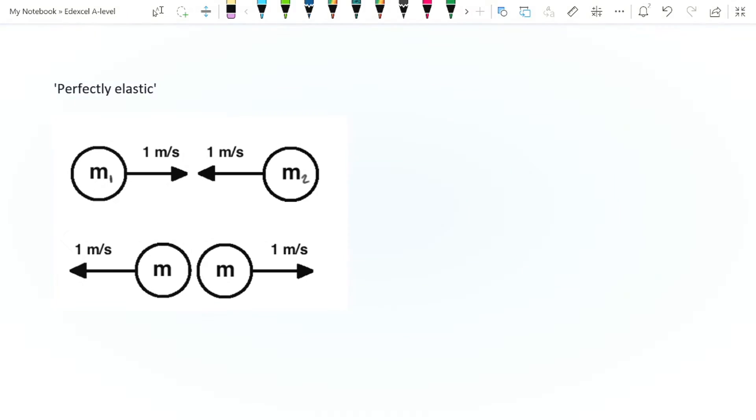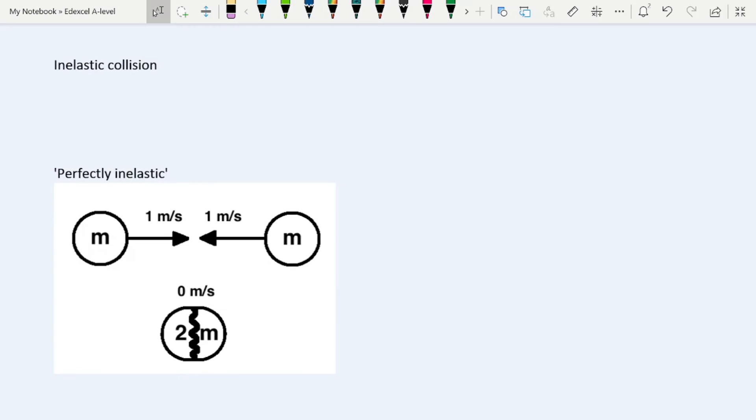An inelastic collision, therefore, is one in which EK is not conserved. This is going to be much more common because, as we know, very often you're going to get a transfer of energy from one store, kinetic energy, to another through work, like friction, through sound, ending up in thermal, usually ends up in thermal anyway. So in inelastic collision, your kinetic energy before is not equal to your kinetic energy after.